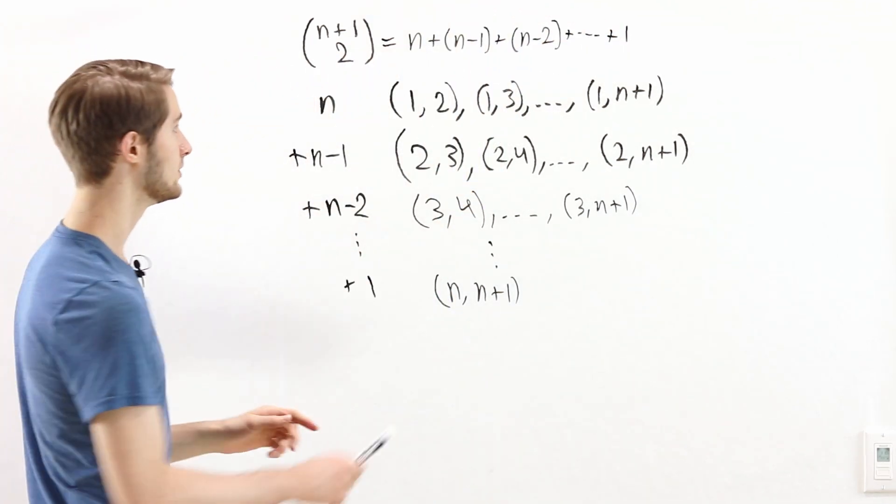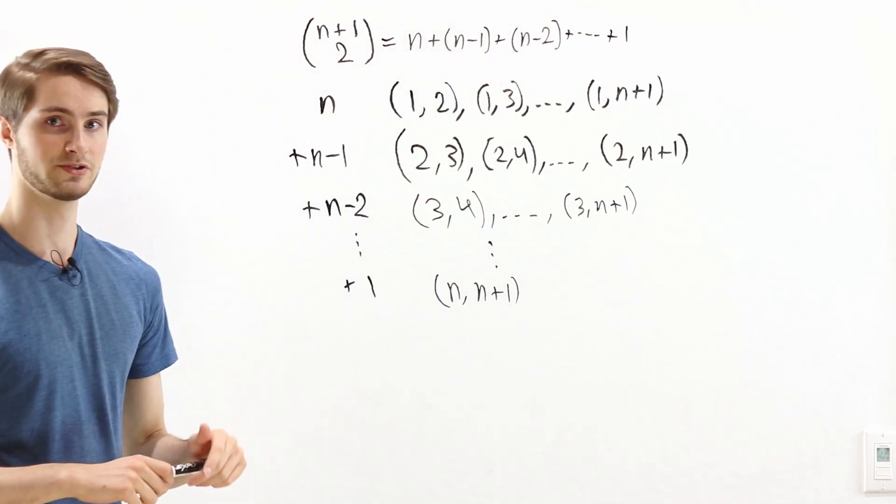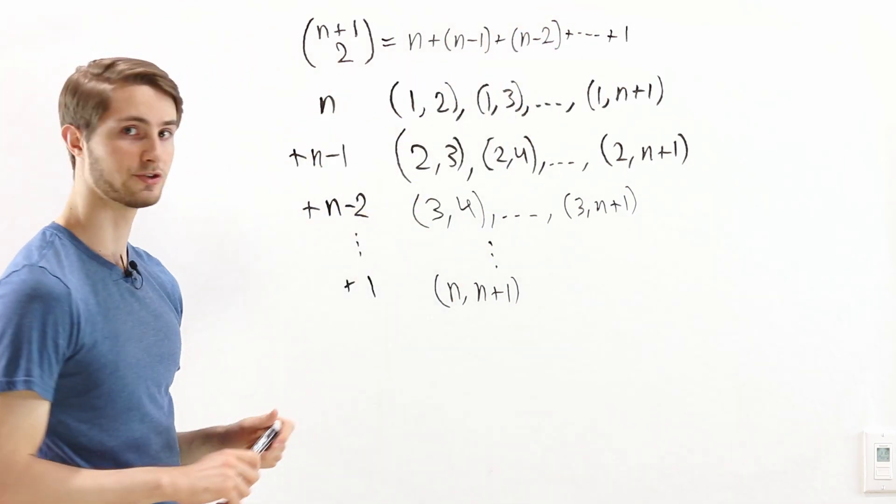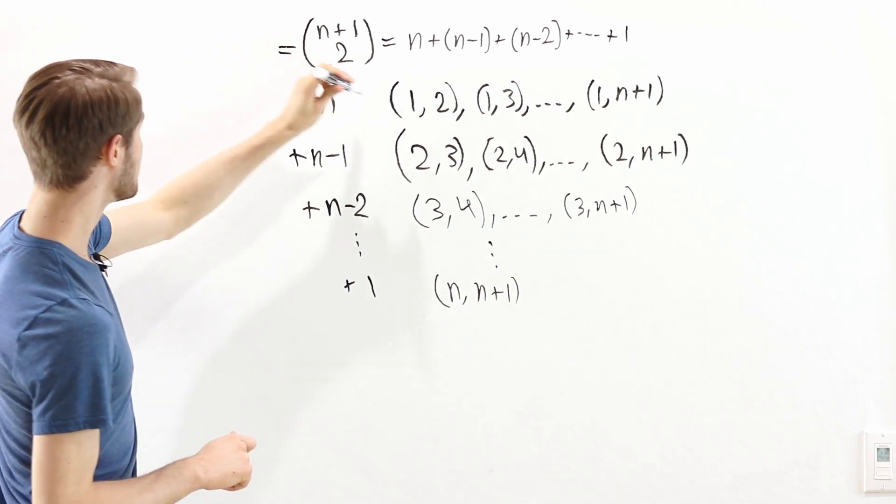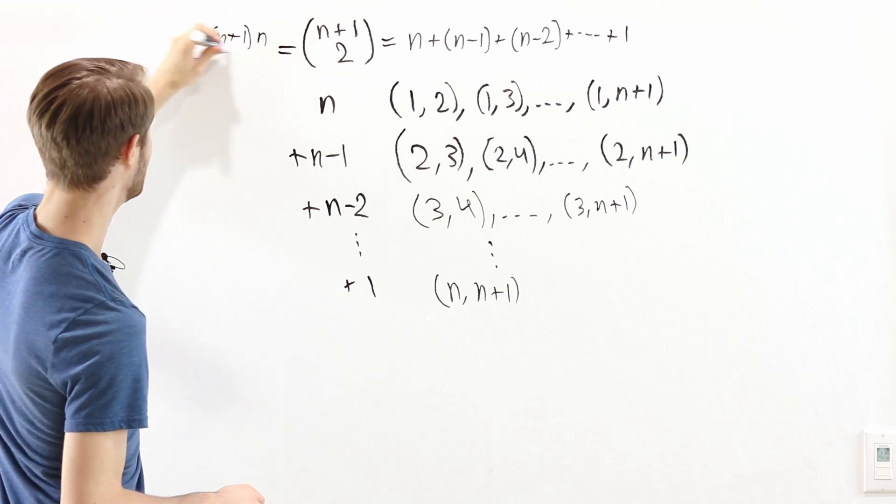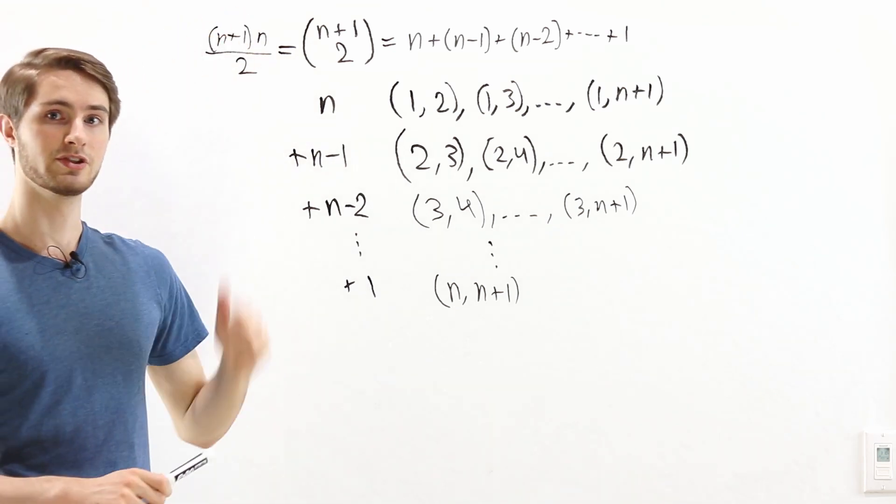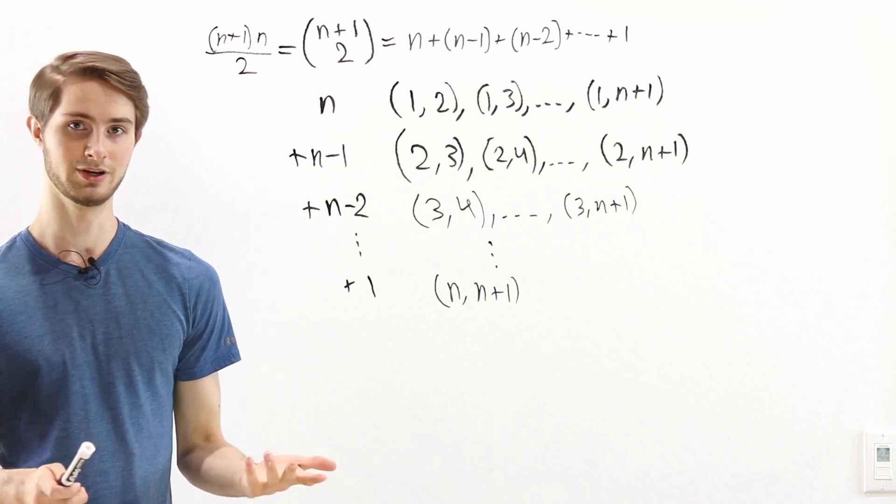And this gives us a nice way to remember the formula for the sum of the first n natural numbers. Because this is equal to n plus 1 choose 2. And we know the formula for the binomial coefficient. This is equal to n plus 1 times n over 2. So that's how we can remember the formula for the sum of the first n natural numbers.